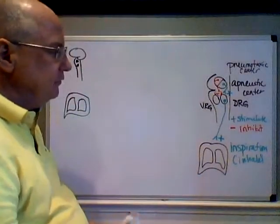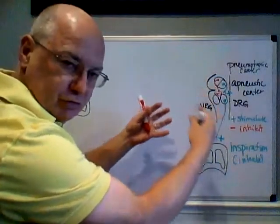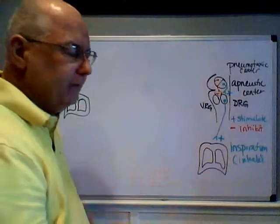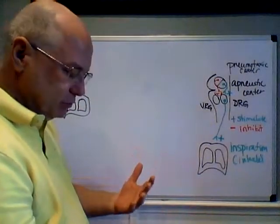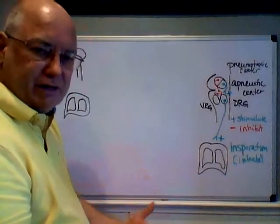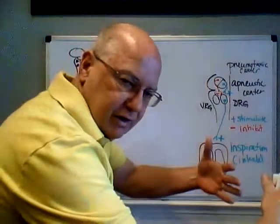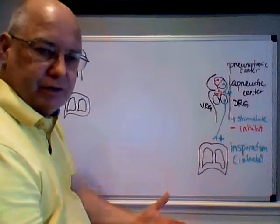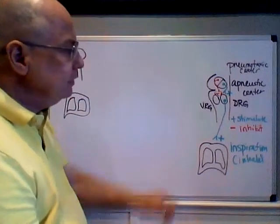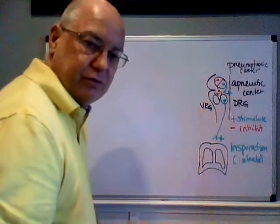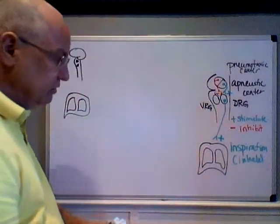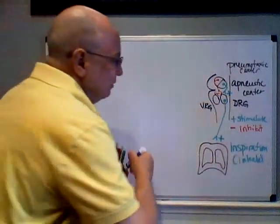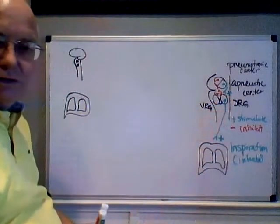The ventral respiratory group has several subgroups of neurons with different effects. Essentially, the VRG is going to fire the muscles of forced exhalation — it helps you force out extra air. It's only necessary during active respiration or hyperpnea. The dorsal respiratory group can help activate the ventral respiratory group in certain situations, and these two communicate and work together.